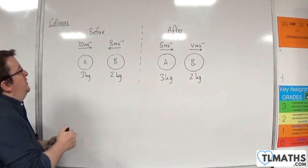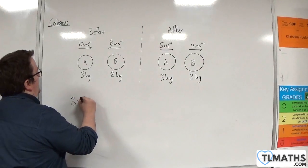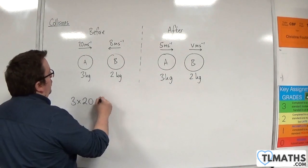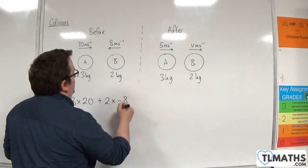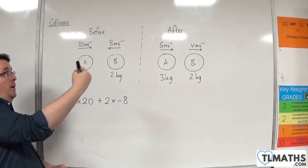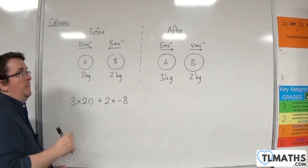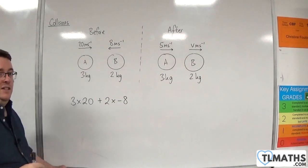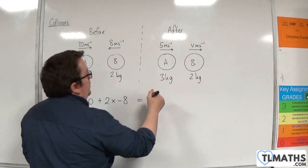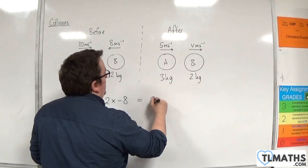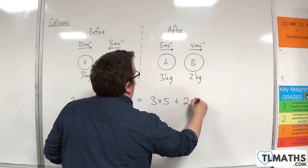So the total momentum before will be 3 times 20, and then we've got 2 times minus 8, because particle B is travelling to the left, so the velocity will be minus 8 metres per second. That's going to be equal to the total momentum afterwards, which will be 3 times 5 plus 2 times V.